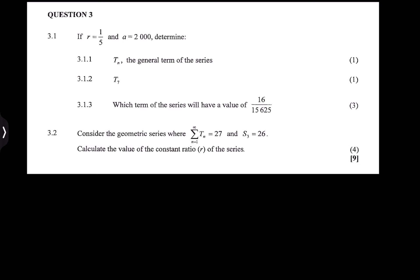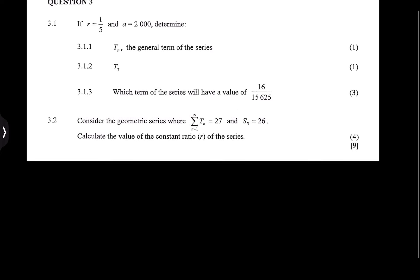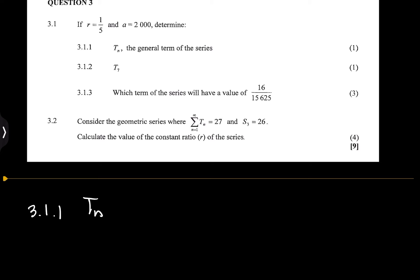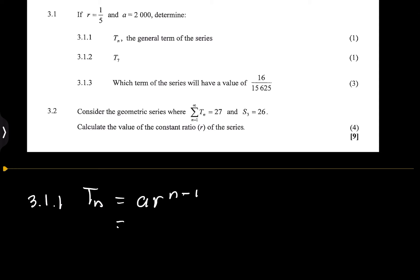For Question 3.1.1, we are given that r equals 1 over 5 and a equals 2000, and we need to determine tn, the general term of the series. They've given us r, the common ratio, as well as a, the first term. This should be a geometric series, so we know that tn equals a times r to the power of n minus 1. Our a value is 2000 and our r value is 1 over 5, raised to the power n minus 1.